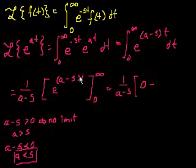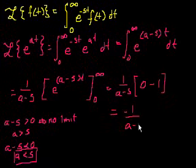So when you evaluate this at 0, what happens? t equals 0, this whole thing becomes 0, e to the 0 is 1. e to the 0 is 1. And we are left with what? Minus 1 over (a minus s).